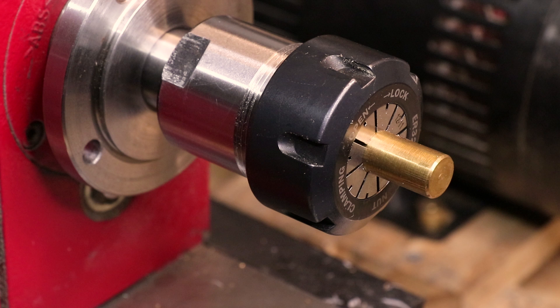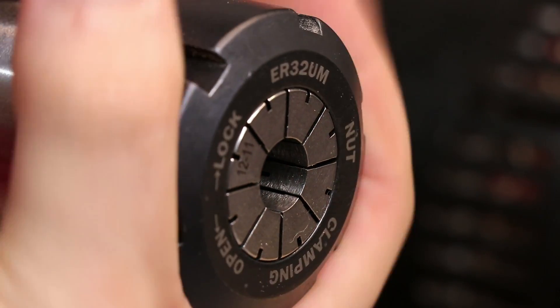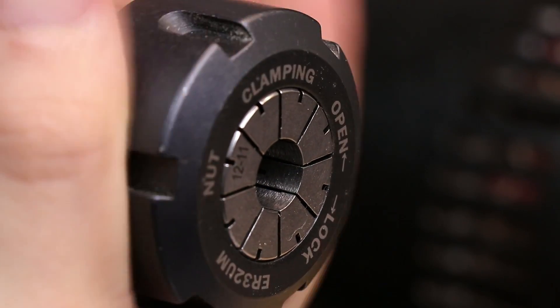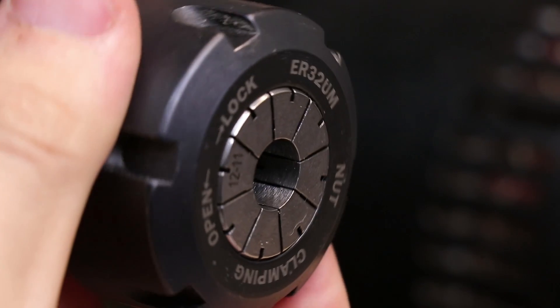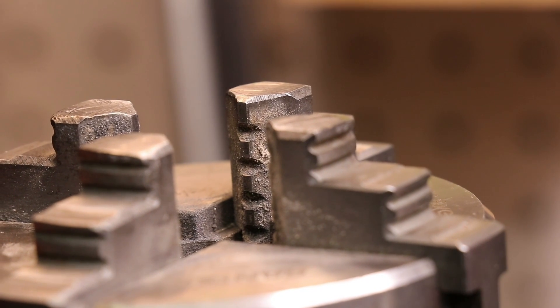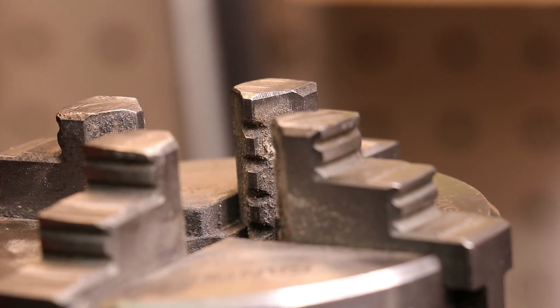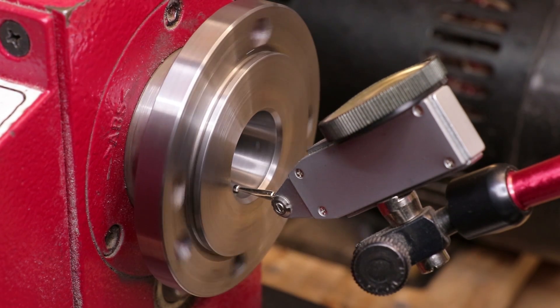However, it's not all negativity. This is still a collet chuck so we should get the advantage of having low run out on our parts. Well hopefully, we will have to test for that. We should also get really good gripping strength on our part. As you tighten the collet, the collet should clamp evenly around the part. The advantage here is that you spread the force over a large area and in that way, you don't mar the part or actually bite into it. Compare this to a steel chuck jaw. The clamping force is spread over a small area and this can bite into plastic or soft materials. Anyway, we do need to see how good the run out is so let's test it.